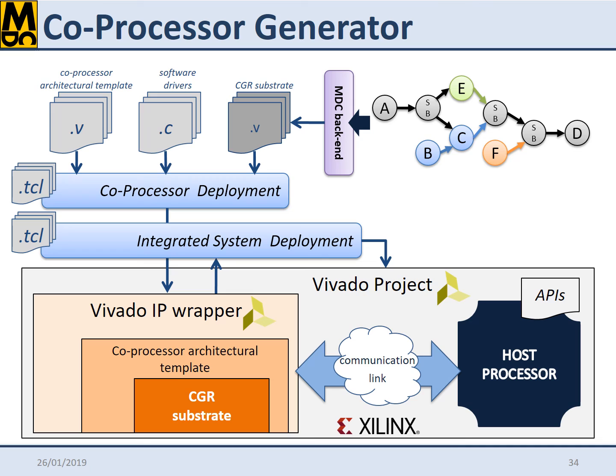A ready-to-be-used peripheral for the Xilinx Vivado environment is assembled by means of the coprocessor deployment script, which basically puts together the architectural template, the software drivers, and the coarse-grained reconfigurable substrate coming from the MDC baseline core backend. The integrated system, where the coprocessor is coupled with a host processor by means of a communication link, is also automatically generated by the integrated system deployment script.